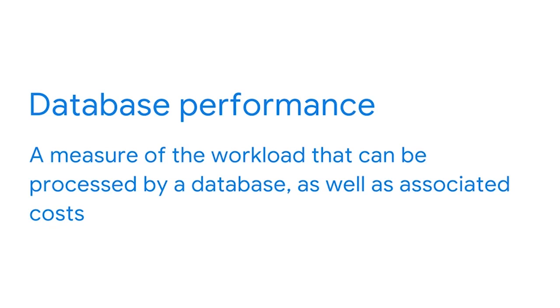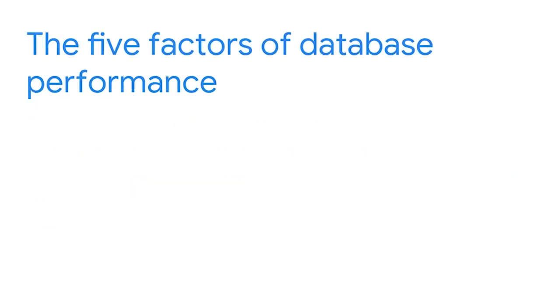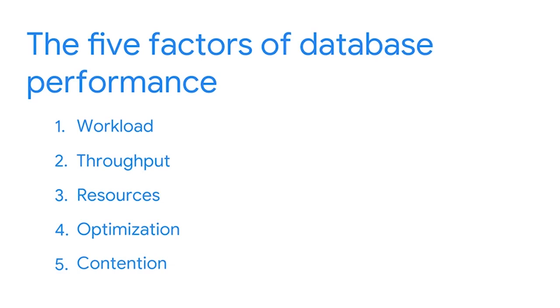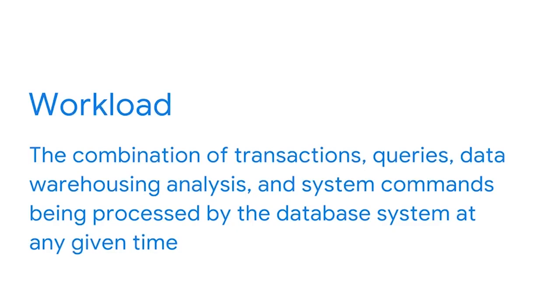We've been investigating database optimization and why it's important to make sure users can get what they need from the system as efficiently as possible. Database performance is a measure of the workload that can be processed by a database, as well as associated costs. The factors that influence database performance are workload, throughput, resources, optimization, and contention. Workload refers to the combination of transactions, queries, analysis, and system commands being processed by the database system at any given time. It's common for a database's workload to fluctuate drastically from day to day, but you can often predict these fluctuations — for instance, there might be a higher workload at the end of the month when reports are being processed.